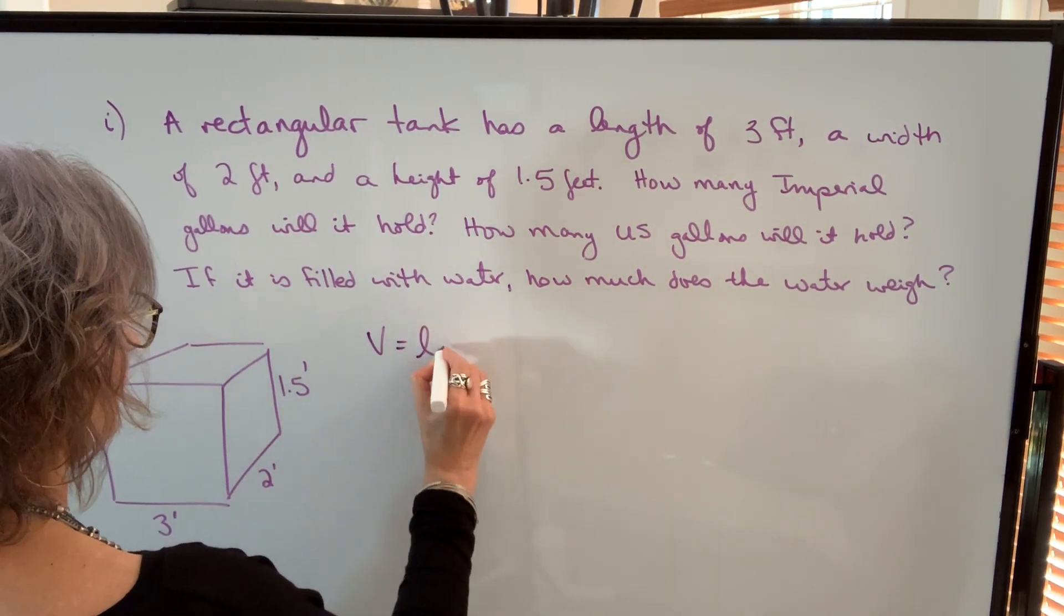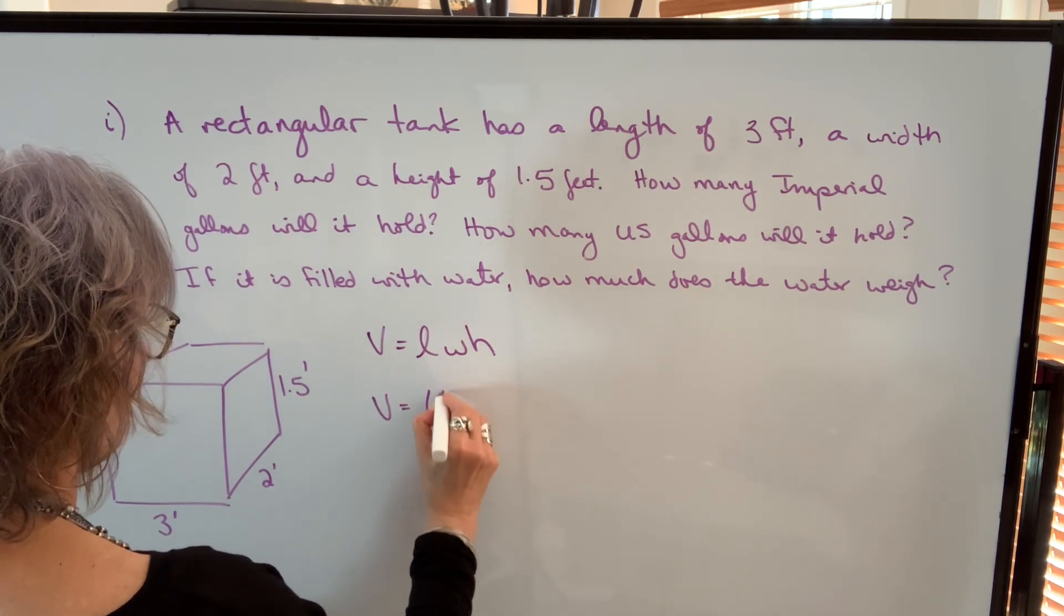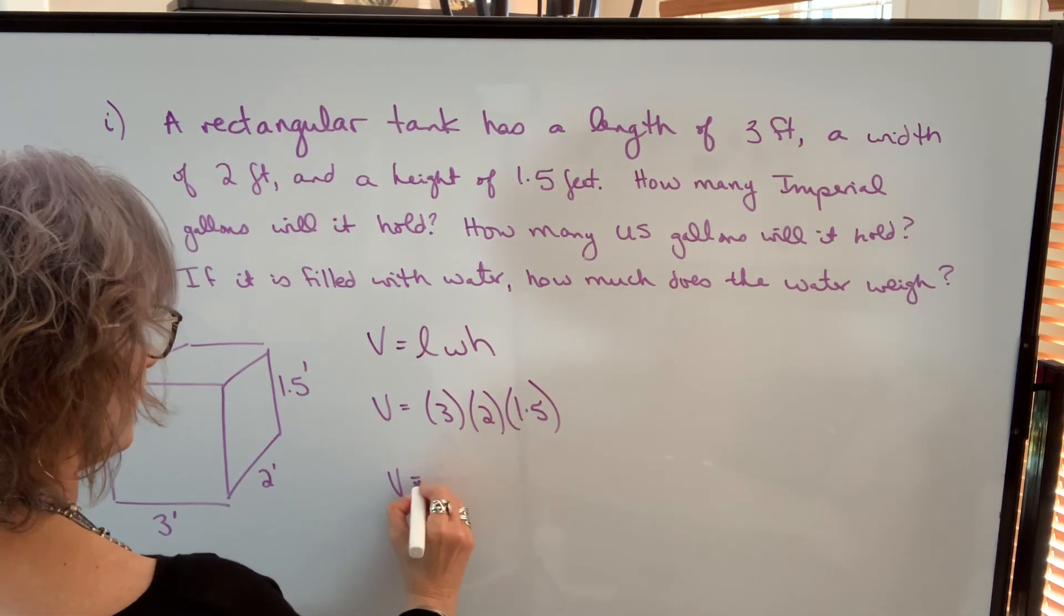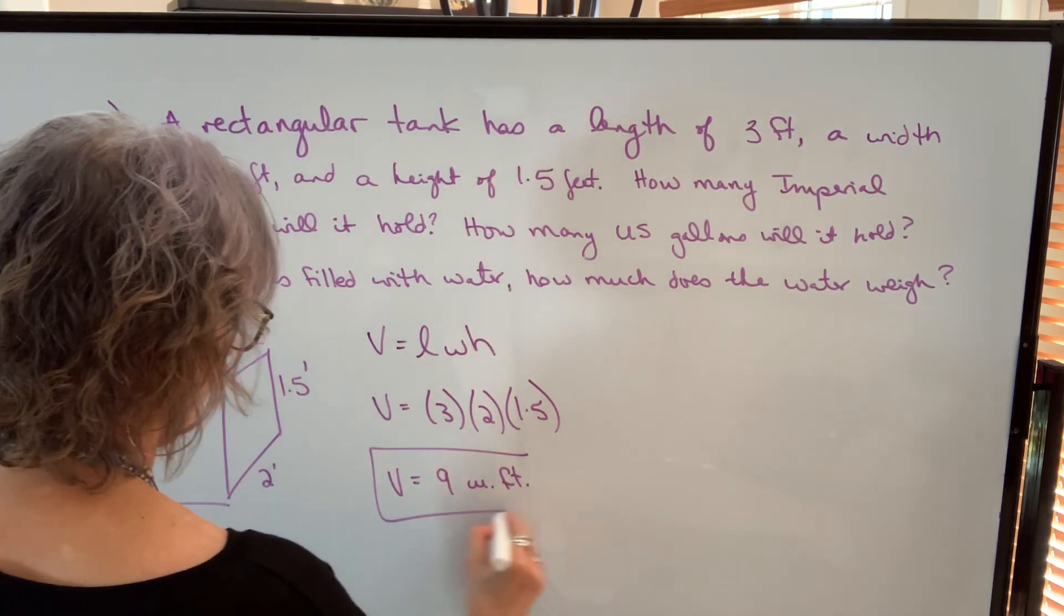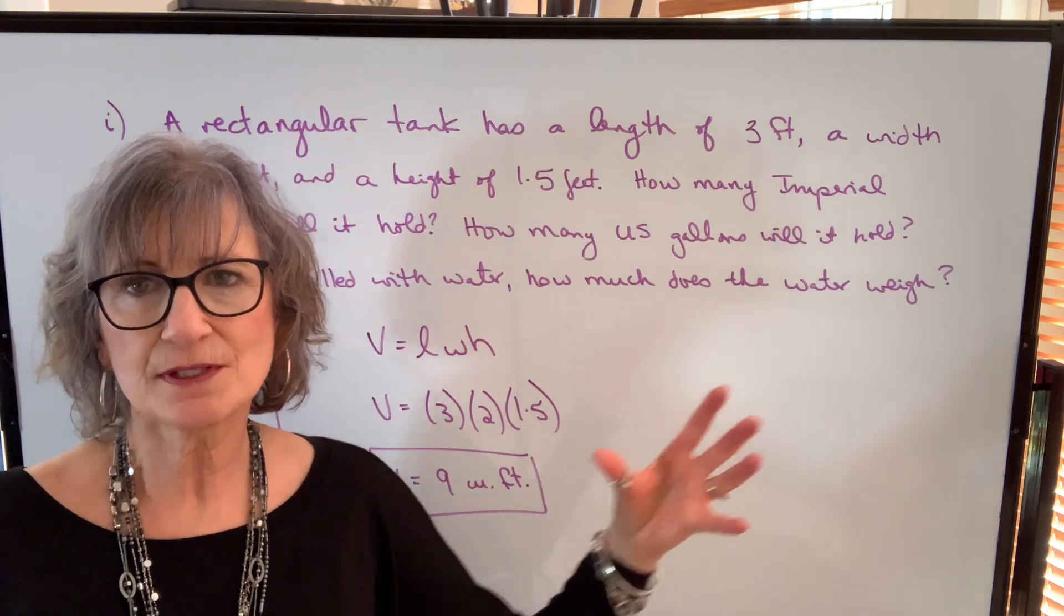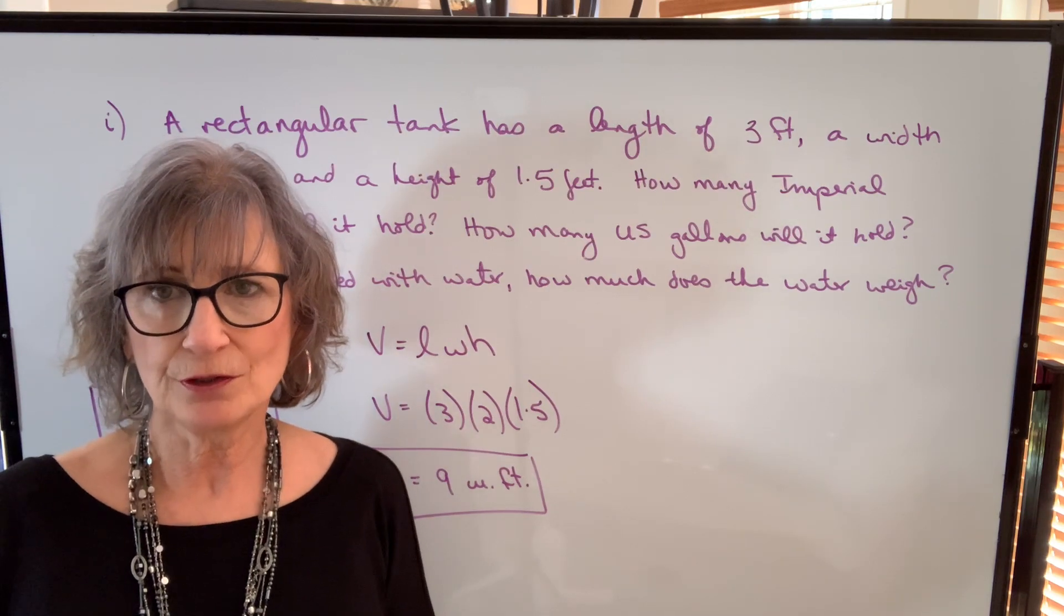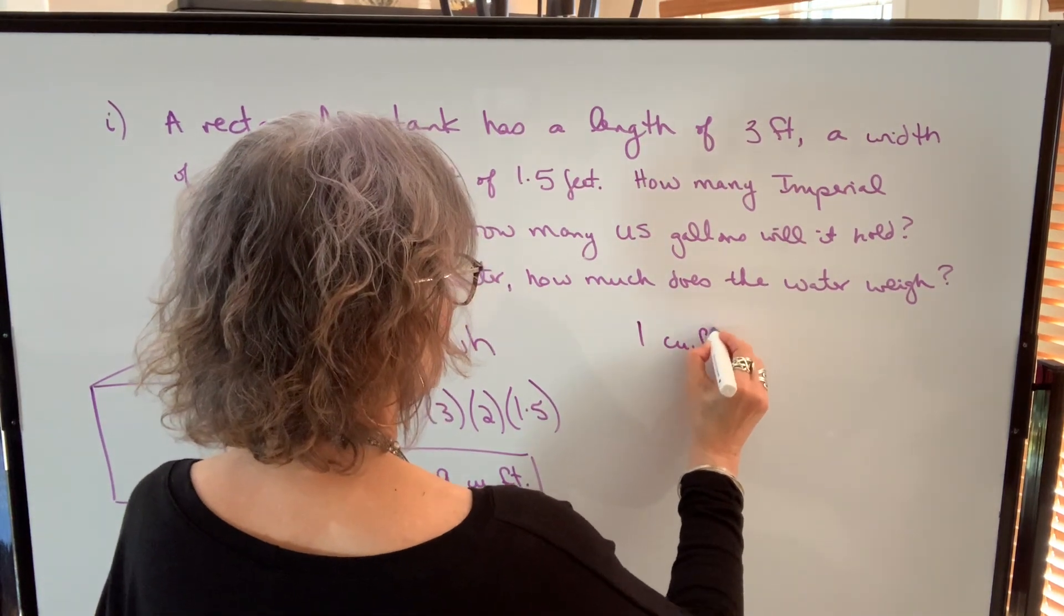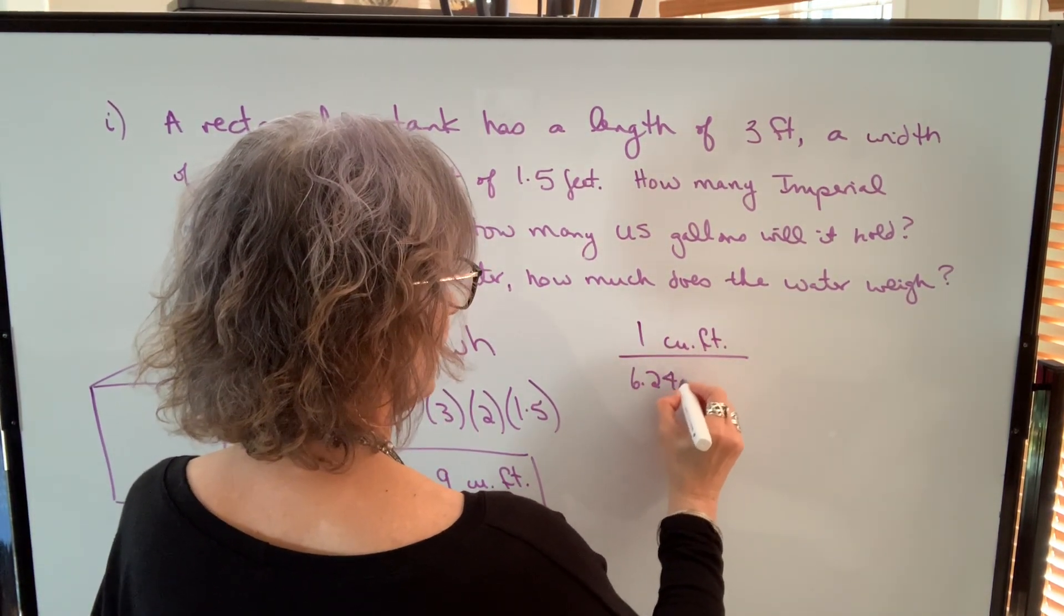So our first step is to find the volume. We know the volume of a rectangular solid is length times width times height. So we have 3 feet by 2 feet by 1.5 feet, which gives us a volume of 9 cubic feet. I find the best way to convert volumes to capacities is through the process of direct proportion. So I'm going to work with Imperial first. I know that 1 cubic foot has a capacity of 6.24 Imperial gallons.